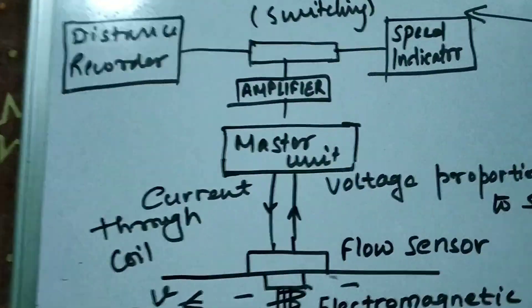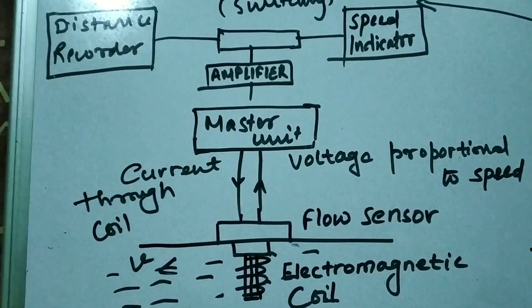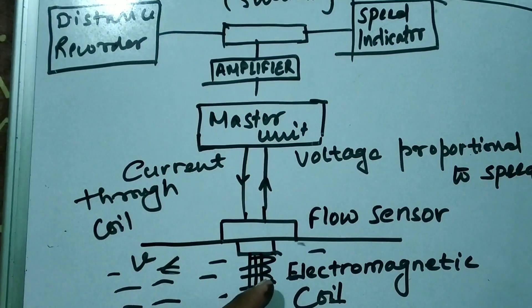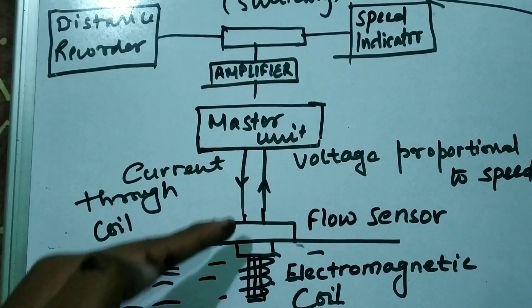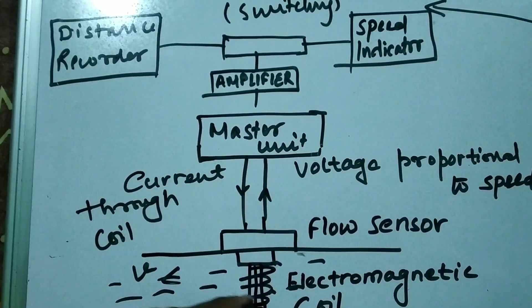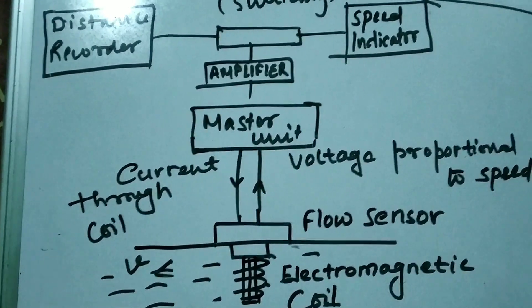As you can see in this block diagram, in the electromagnetic log an electromagnet consisting of a coil carrying AC current generates a vertical magnetic field in the water around the probe. As you can see in this picture, a vertical magnetic field is generated around the probe.